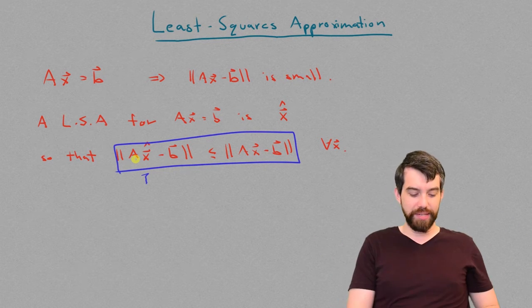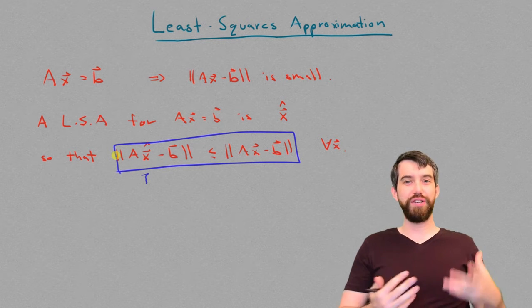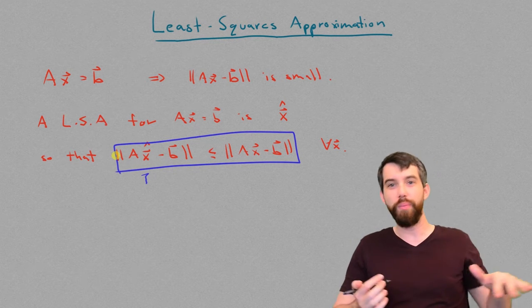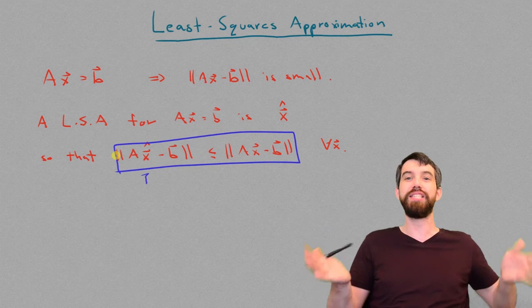So, in other words, a times x, if you allow x to vary, it can be thought of as all the linear combinations of the columns of a. It's a subspace.